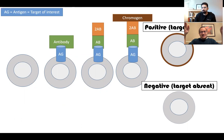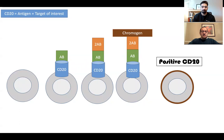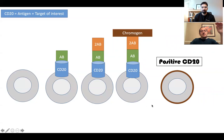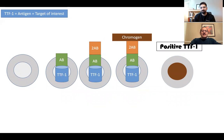Let's assume your antigen of interest is CD20. CD20 is an antigen found on B lymphocytes and found on the membrane of the cell. The antibody attaches to the CD20, the secondary antibody attaches to that, the chromogen attaches to that, and then the entire membrane turns brown. So when you do immunohistochemistry for CD20, the membrane of the cells with CD20 turns brown. Another example: if the antigen of interest is not on the membrane but in the nucleus - a typical example would be thyroid transcription factor, TTF1 - the same sequence of events happens, except the thing that turns brown is the nucleus.